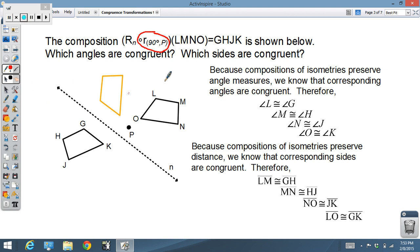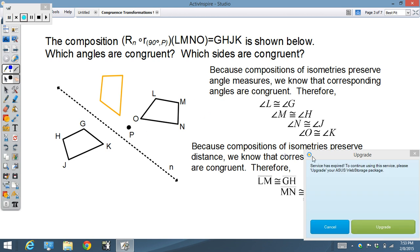After that, we're going to do the reflection step. We're going to do a reflection over line N, so that every point from the orange figure translates over to figure GHJK. So once again, we're doing a composition of transformations, one rotation, one reflection, and we're going to get two congruent figures.